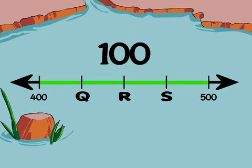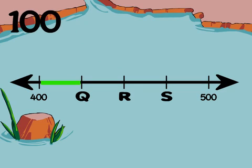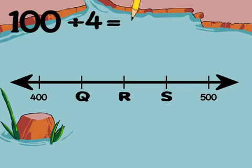Step two, count the segments in between and find each length. Here we see four equal segments between the benchmarks. 100 divided by 4 is 25, so each segment represents 25.